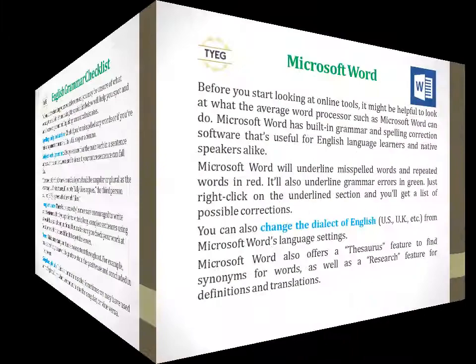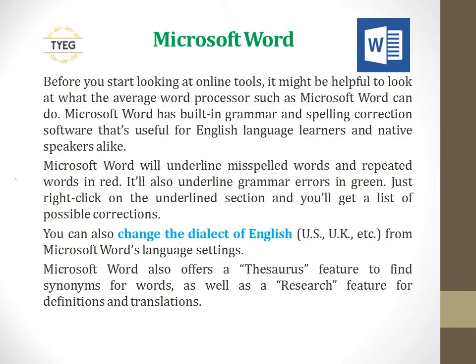Microsoft Word. Before you start looking at online tools, it might be helpful to look at what the average word processor such as Microsoft Word can do. Microsoft Word has built-in grammar and spelling correction software that's useful for English language learners and native speakers alike. It will underline misspelled and repeated words in red, and grammar errors in green. Just right-click on the underlined section and you'll get a list of possible corrections.